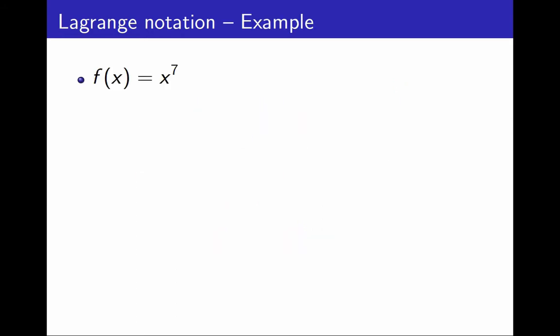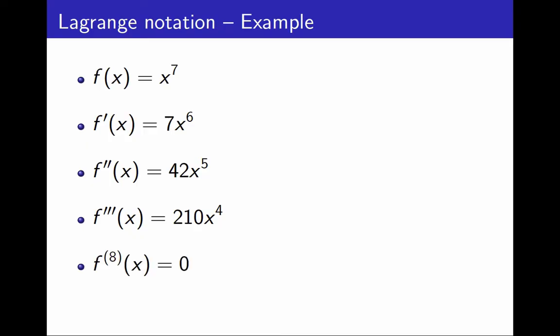For example, consider the function f defined by f equals x to the 7. Then the derivative is 7x to the 6, and the second derivative is 42x to the 5. The third derivative is 42 times 5, which is 210 times x to the 4, and so on. The eighth derivative would be 0, because after 7 derivatives all the x's are gone.